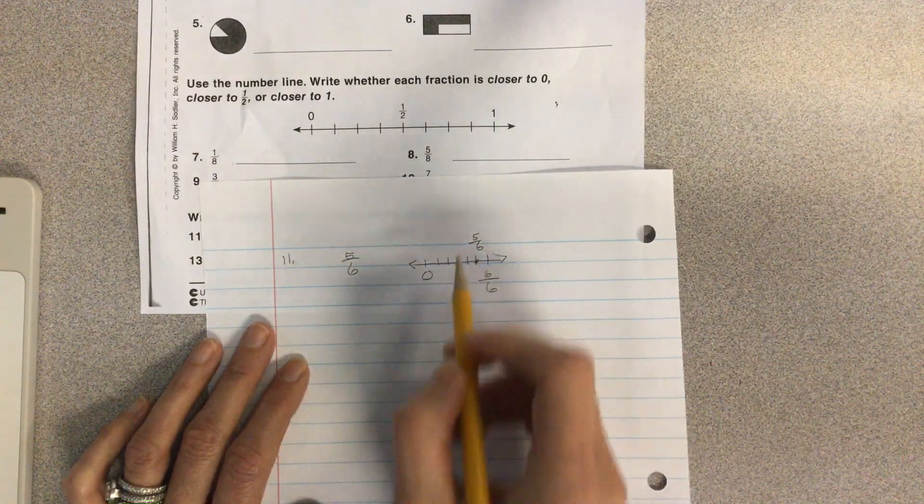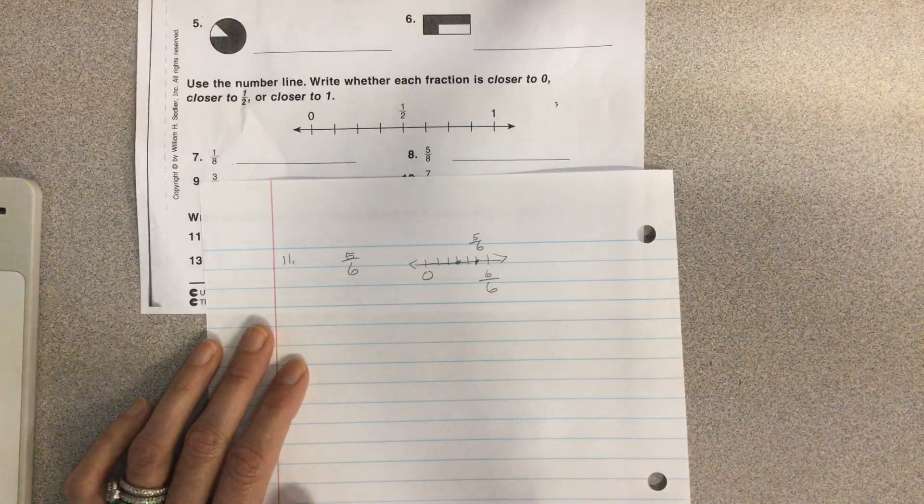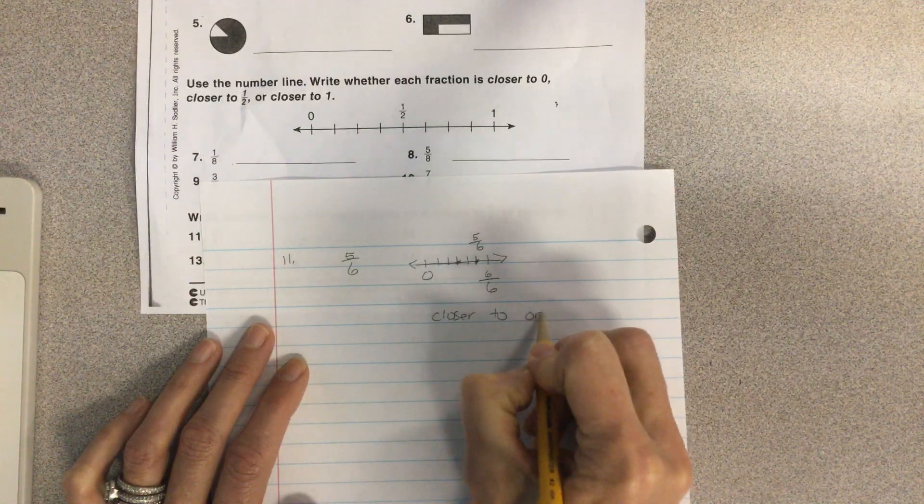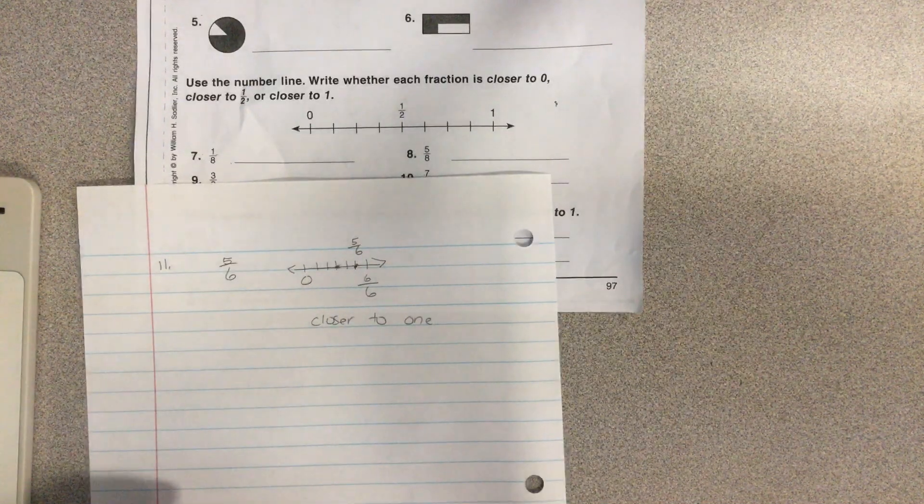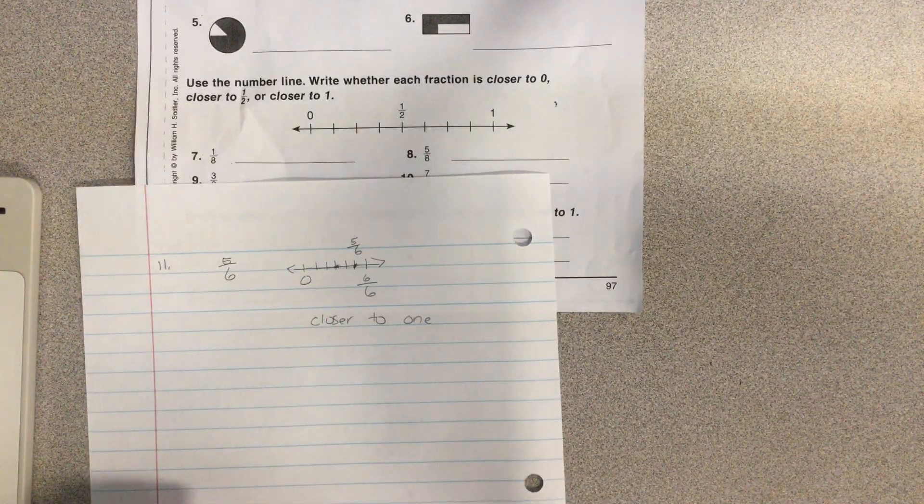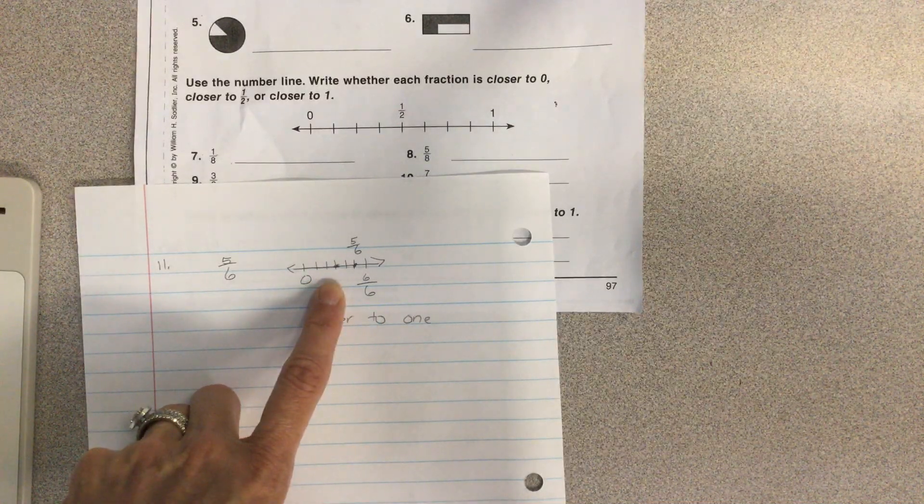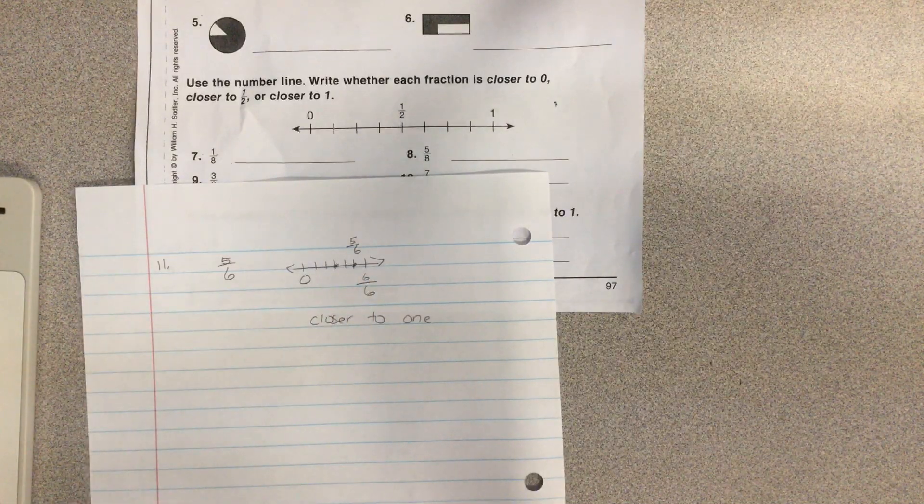Is that going to be closer to zero, closer to my halfway point right here, or closer to one? That's a pretty easy one, closer to one. So some of them you'll be able to do in your head. Others of them it would be probably pertinent for you to create a number line. And then it would help you to see actually visually on the number line whether it's closer to zero, closer to the halfway point, or closer indeed to the whole number one.